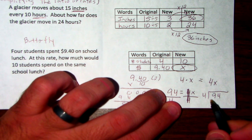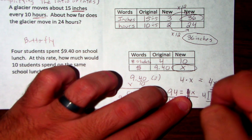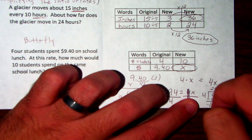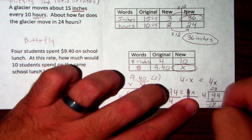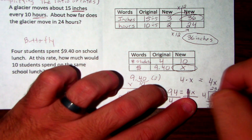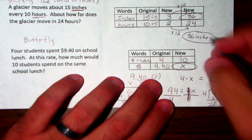4 can go into 9 two times. 4 can go into 14 three times. 4 can go into 20 five times. So it'd be $23.50 is your answer.